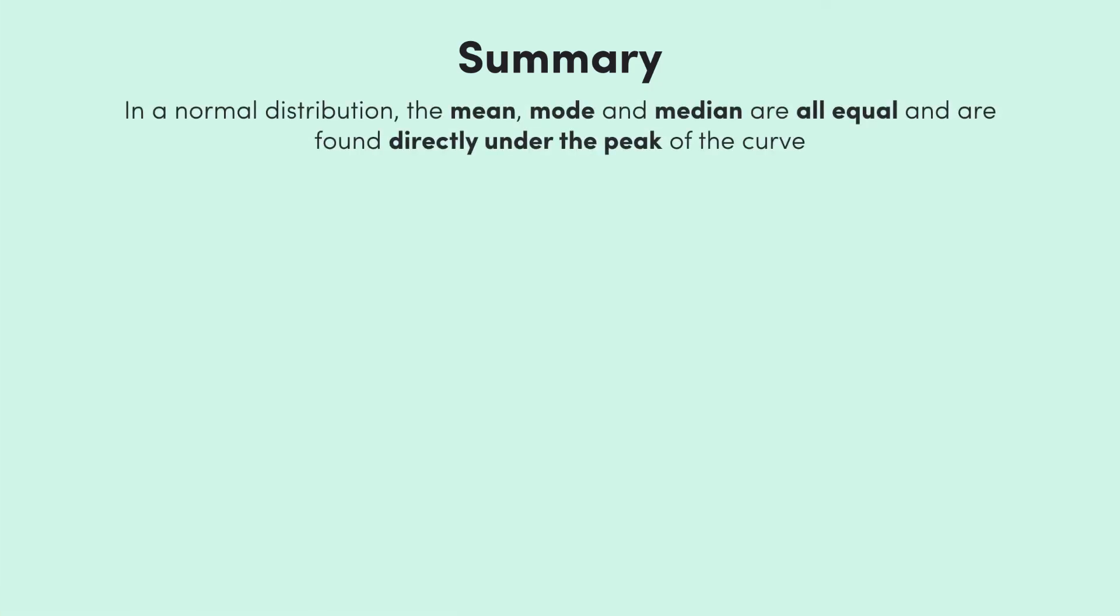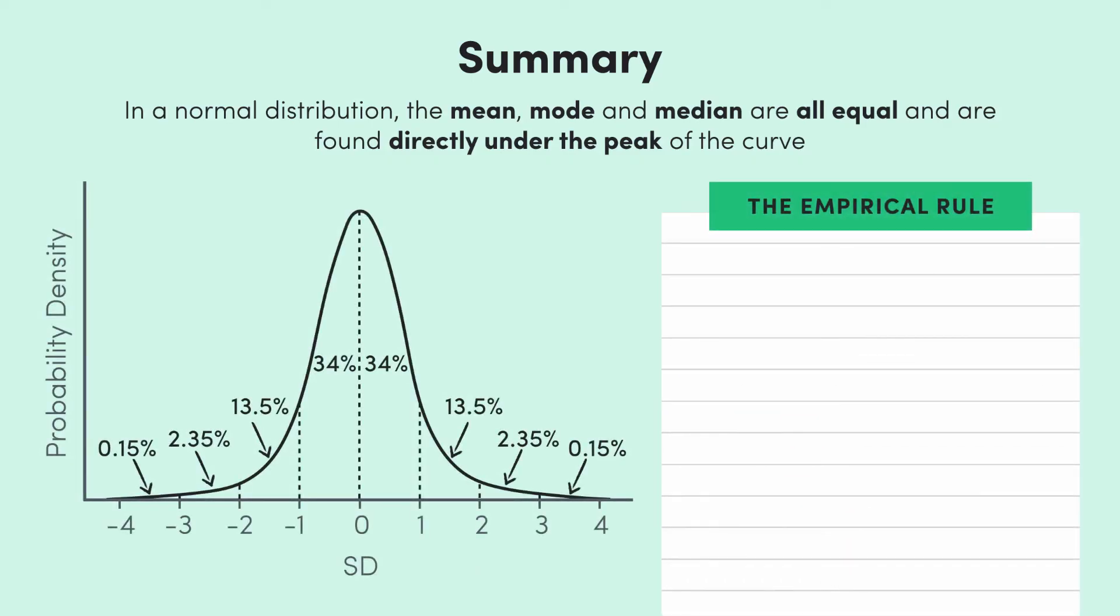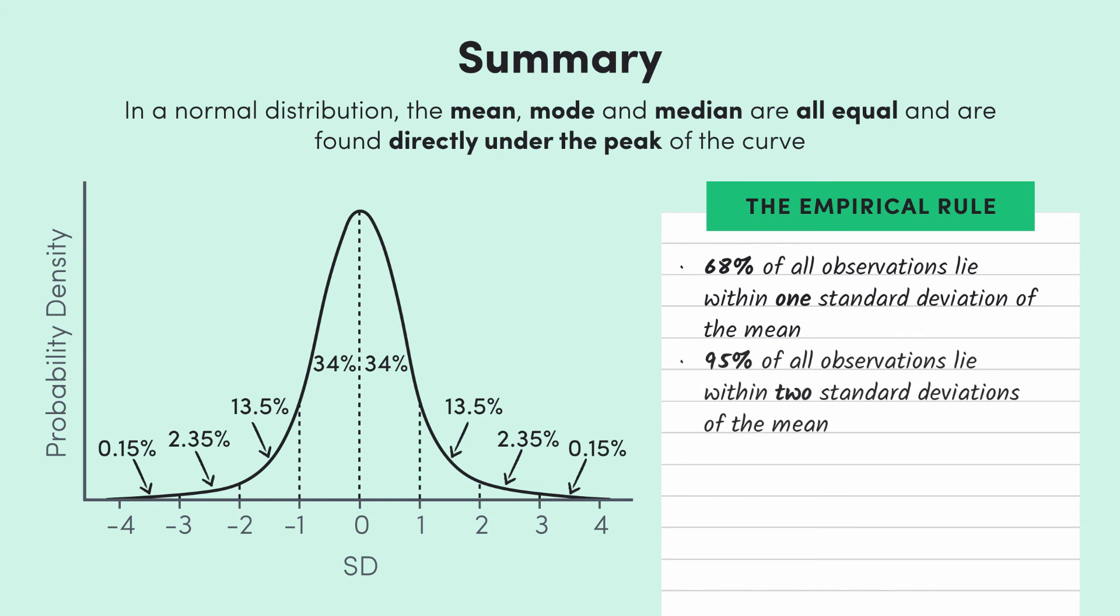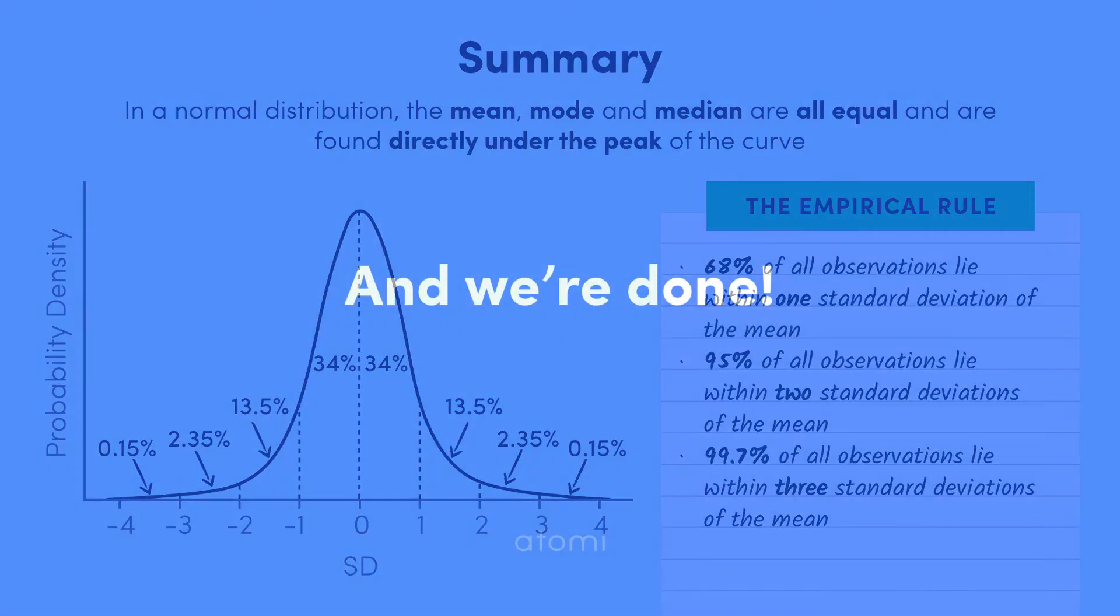So let's wrap this up. In this video, we saw that in a normal distribution, the mean is the same as the mode, which is the same as the median. And all of these are found in the centre of the distribution directly under the peak. Then we saw that the empirical rule or the 68, 95, 99.7% rule says that 68% of all observations in a normal distribution lie within one standard deviation of the mean. 95% of all observations in a normal distribution lie within two standard deviations of the mean. And 99.7% of the observations lie within three standard deviations of the mean. Just remember these three numbers. And using the fact that the normal distribution is symmetrical, we can figure out these other numbers that we can see here. That's it for this video. See you soon.